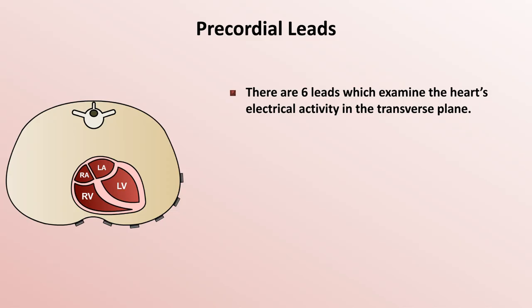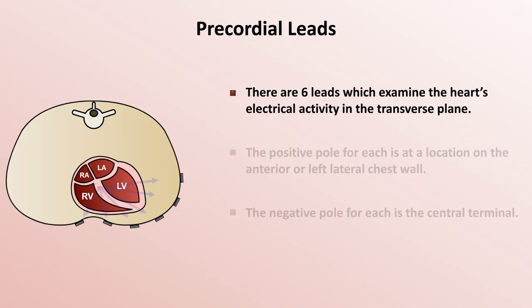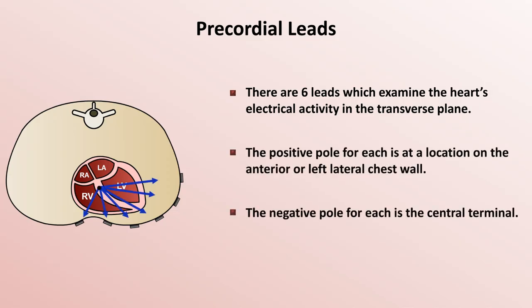The positive pole for each precordial lead is at a location on the anterior or left lateral chest wall, while the negative pole for each is the central terminal. The leads are named V1 through V6 as moving right to left.